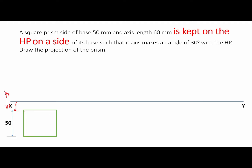For the notation, always start from the left-most part and always go in the anti-clockwise direction. After marking the first point, don't jump — go to the adjacent point in anti-clockwise order: first point, second point, third point, fourth point. These points are very important while giving the notation. Always start with the left-most part and go in the anti-clockwise direction.